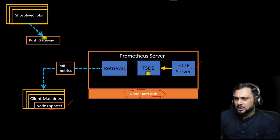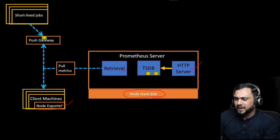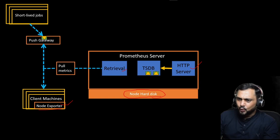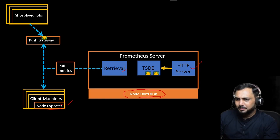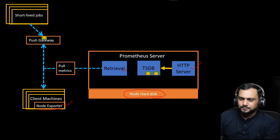Technically, jobs push their metrics to the push gateway using HTTP requests. The push gateway stores these metrics temporarily, and then Prometheus scrapes the push gateway at regular intervals to collect them. There are some limitations: the push gateway does not automatically delete old metrics, so you need to manage stale metrics manually. Also, it can become a single point of failure if not managed properly. For these reasons it is not recommended unless there is no other option.